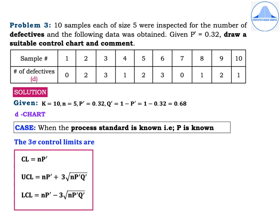Problem 3: Ten samples, each of size 5, were inspected for the number of defectives and the following data was obtained. Given P' = 0.32, draw a suitable control chart and comment. The table has sample numbers 1 to 10 with corresponding defectives: 0, 2, 3, 1, 2, 3, 0, 1, 2, 1. These number of defectives are marked as d, highlighted in pink.